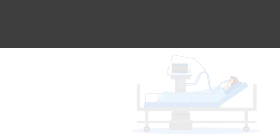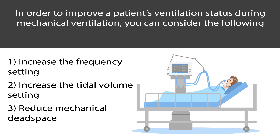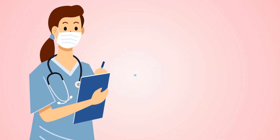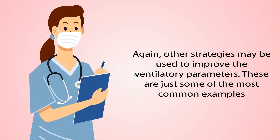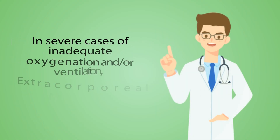In order to improve a patient's ventilation status during mechanical ventilation, you can consider the following: increase the frequency setting, increase the tidal volume setting, and reduce mechanical dead space. Again, other strategies may be used to improve the ventilatory parameters — these are just some of the most common examples.